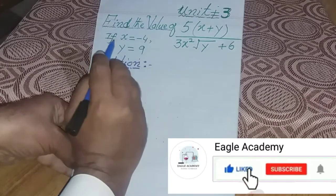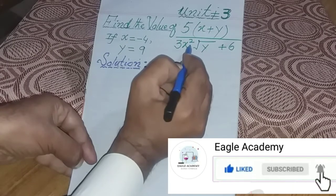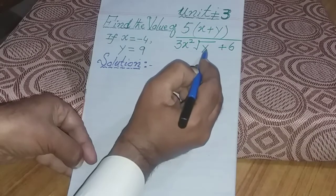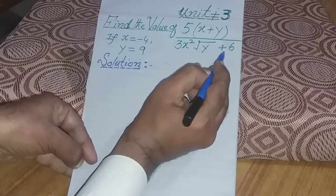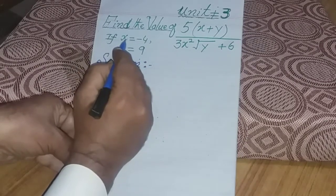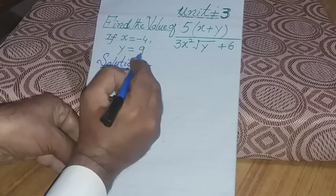Find the value of 5 bracket x plus y bracket over upon 3x squared radical y plus 6. If value of x is minus 4 and value of y is 9.